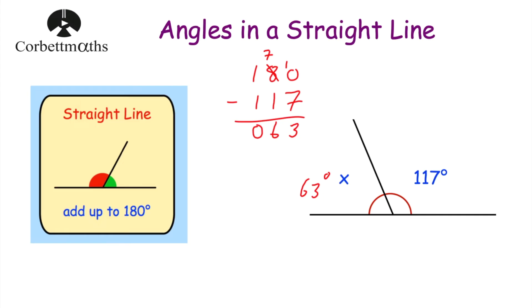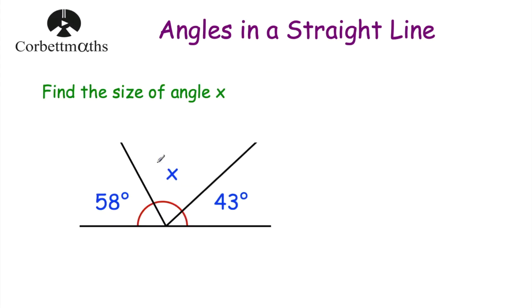Let's have a look at our next example. This time we've got a straight line and we've got three angles: 58 degrees, x, and 43 degrees. These three angles will add together to be 180 degrees. So to work out the size of angle x, we'll add 58 degrees and 43 degrees, take that answer away from 180, and what's left will be x.